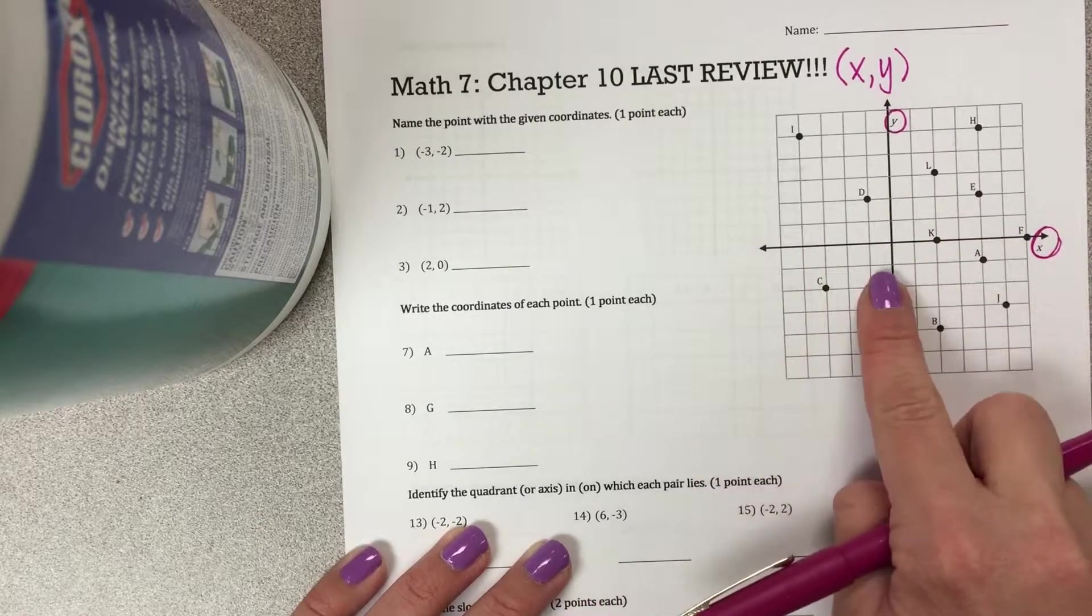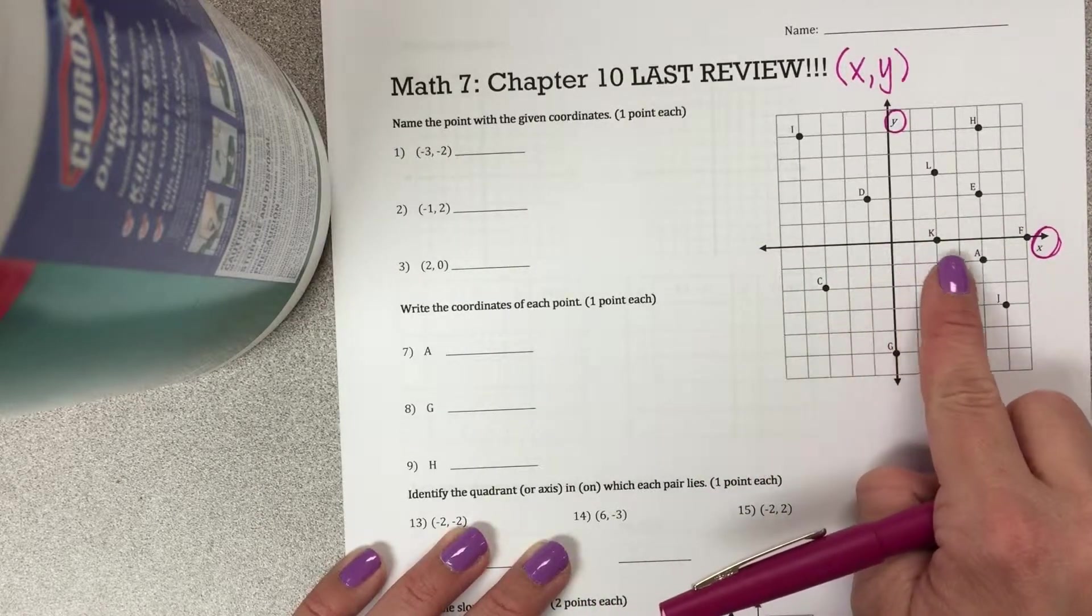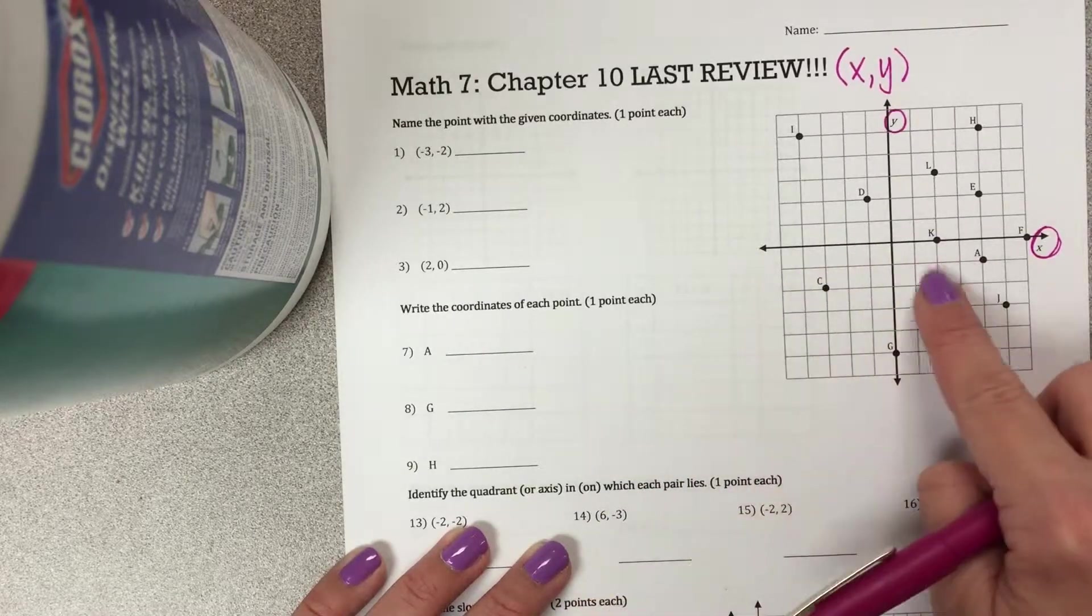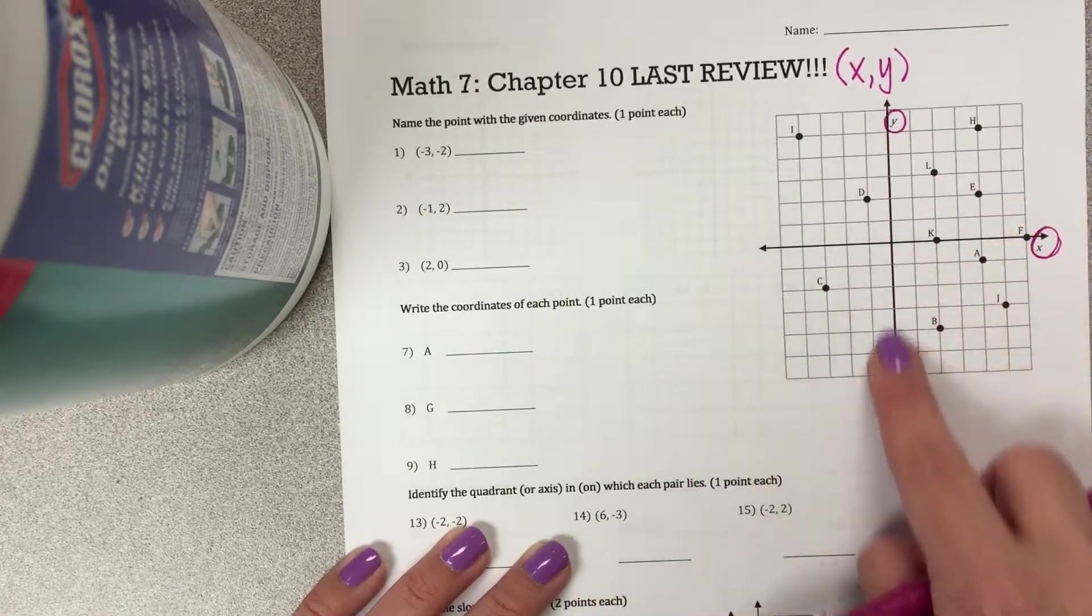X is a horizontal number line, so this is 0, 1, 2, 3, 4, 5. This is negative 1, 2, 3, 4, and 5. Going up is positive, down is negative.